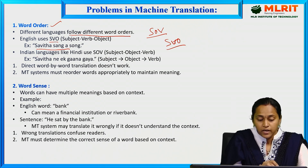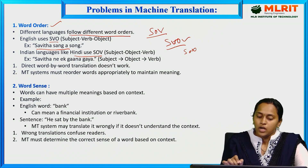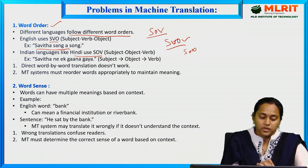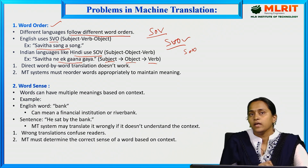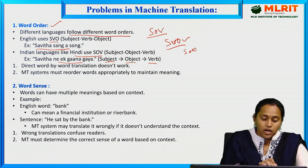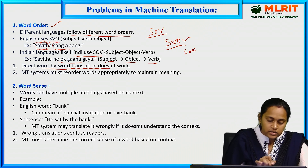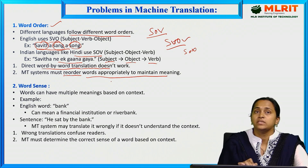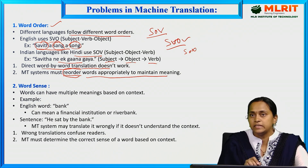For example, 'Savita sang a song' — in Hindi it becomes 'Savitha ne ke gana gaya' (subject-object-verb order). Direct word-by-word translation does not work; we must reorder words appropriately to maintain the meaning. A change in word ordering is compulsory to preserve the sentence's meaning when translating across languages.